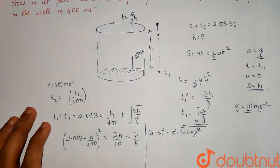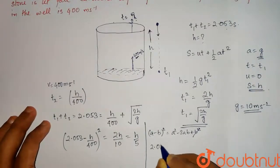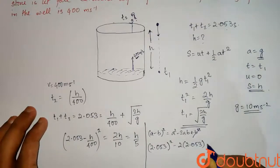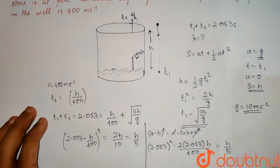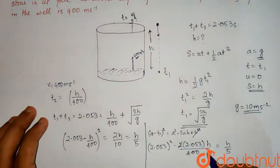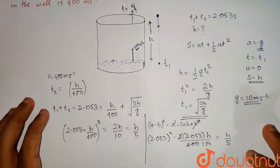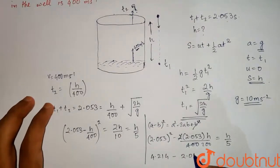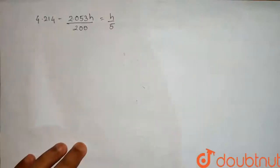So we are left with 2.053 whole square minus 2 times 2.053 into H by 400 is equal to H by 5. This 2 and this 2 cancel. We get 2.053 whole square which is 4.214 minus 2.053H by 200 is equal to H by 5. So this is your equation.